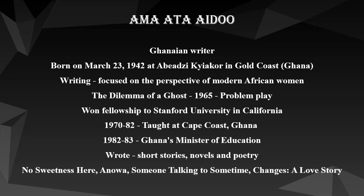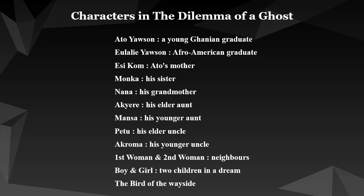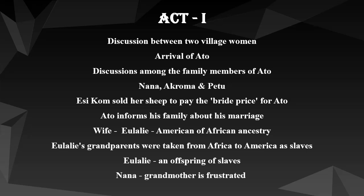Some of her works include No Sweetness Here, a collection of short stories; Anowa; Someone Talking to Sometime, a collection of poetry; and Changes: A Love Story, a novel. The characters in this play are Ato Yawson, a young Ghanaian graduate; Eulalie Yawson, an Afro-American graduate; Esicom, Ato's mother; Monka, his sister; Nana, his grandmother; Akire, his elder aunt; Mansa, his younger aunt; Petu, his elder uncle; Akroma, his younger uncle; First Woman and Second Woman, neighbors; Boy, Girl, two children in a dream; and the Bird of the Wayside.